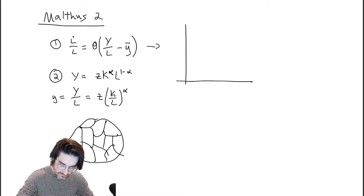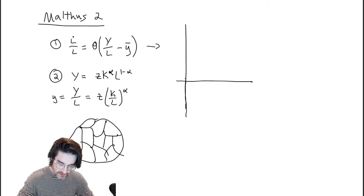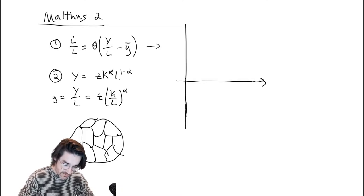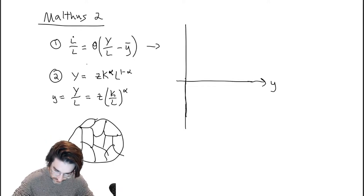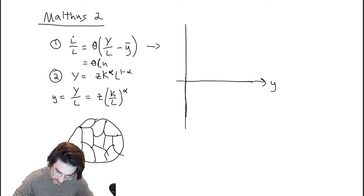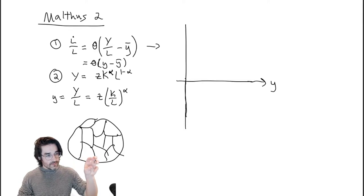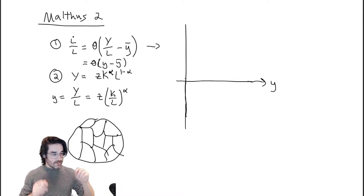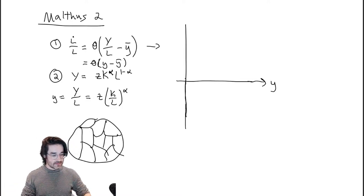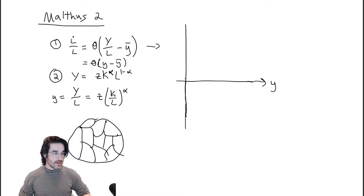In terms of the demographic rule — remember we plotted that — remember this can actually go negative. So we plotted that: I'll call it little y from now on. You can write this as theta times (y minus y-bar). Y-bar is just a number — it's your minimum standard of living at which population stagnates. Y is the actual standard of living moving around over time, and theta is just a scaling constant.